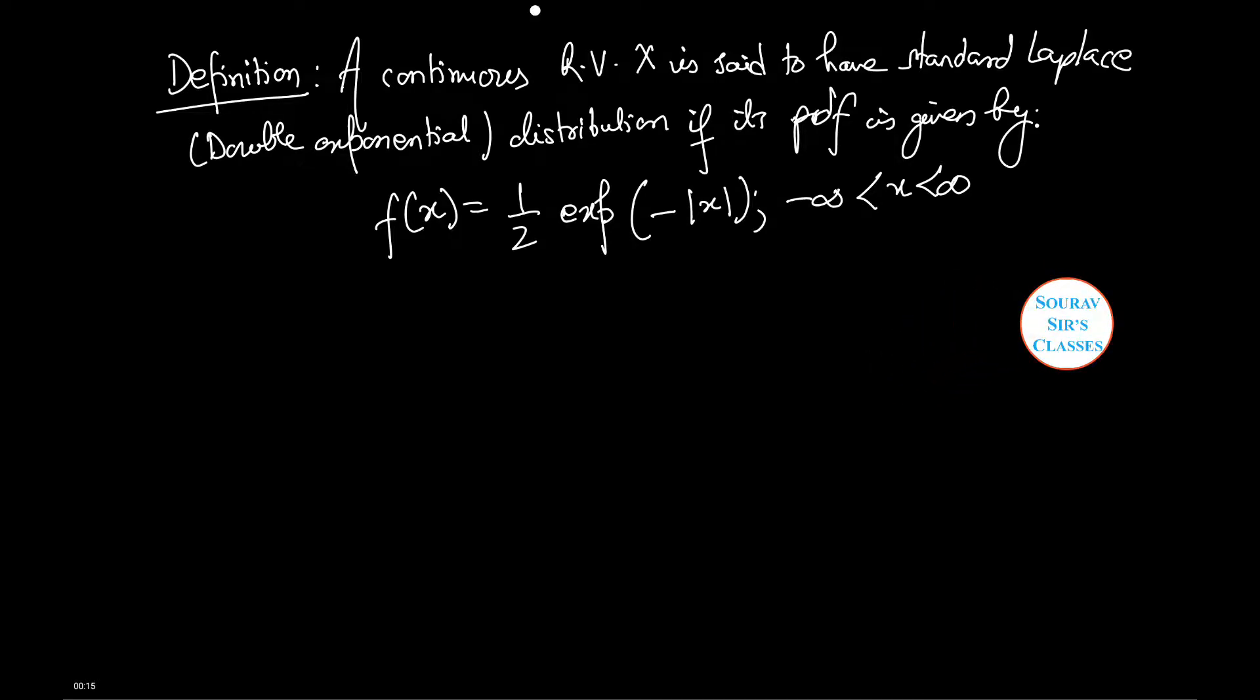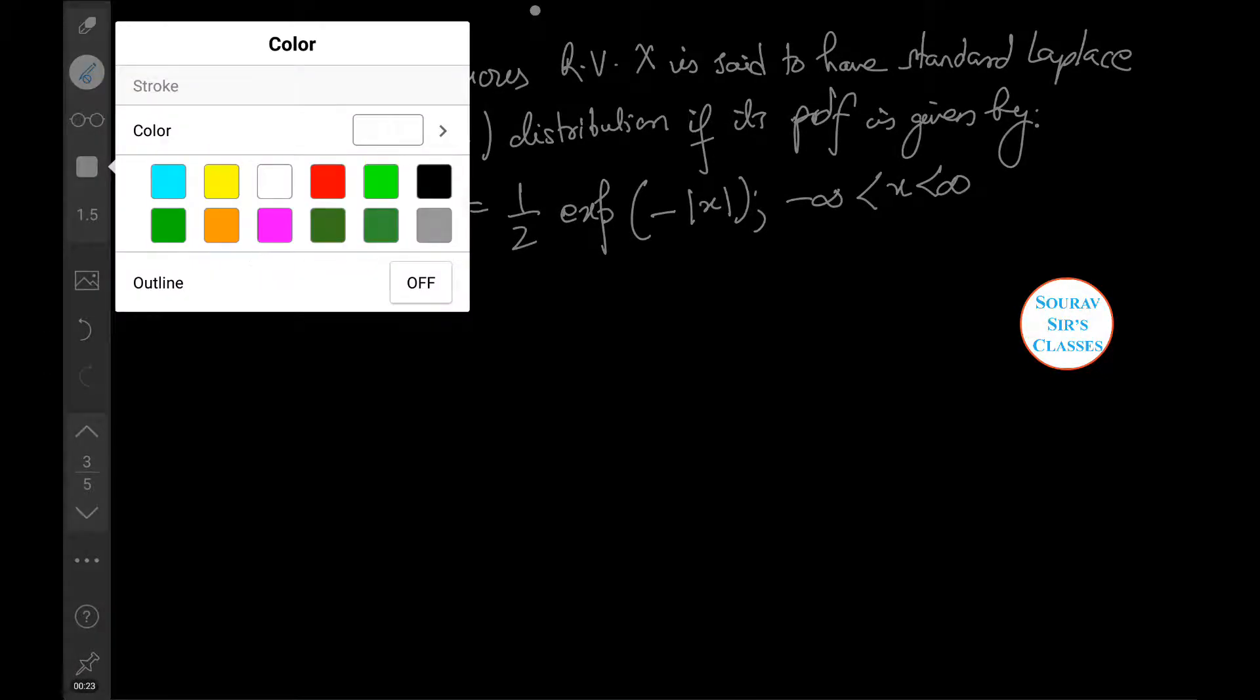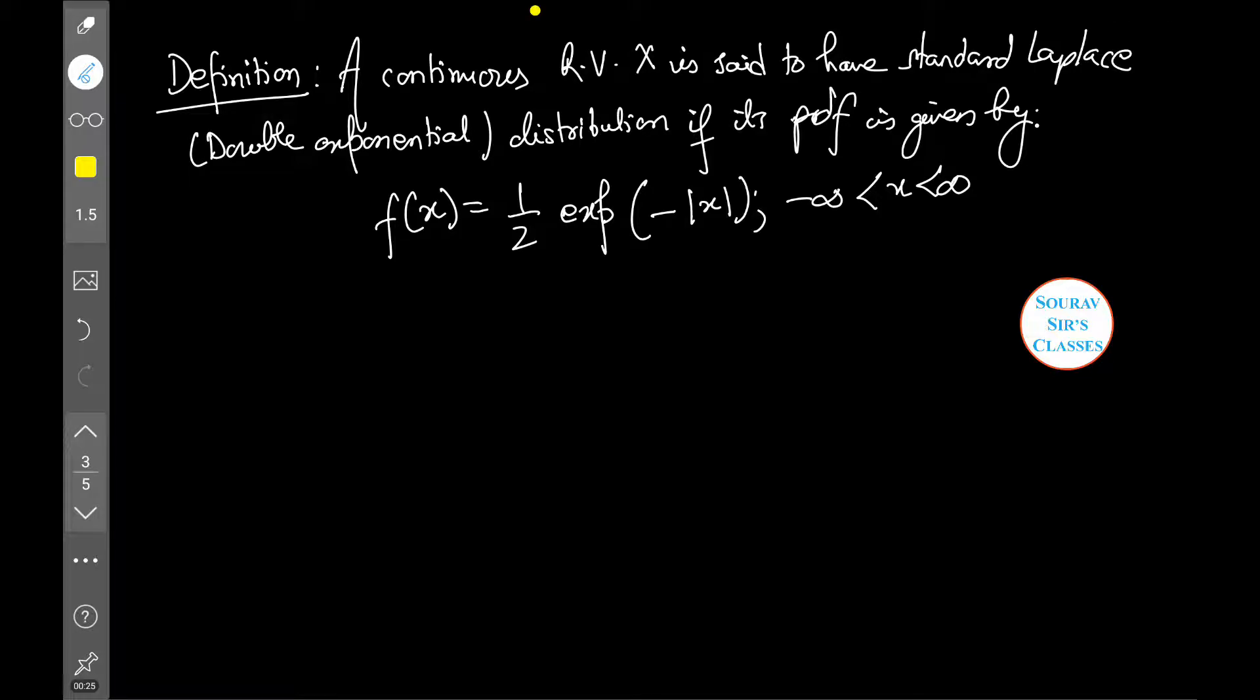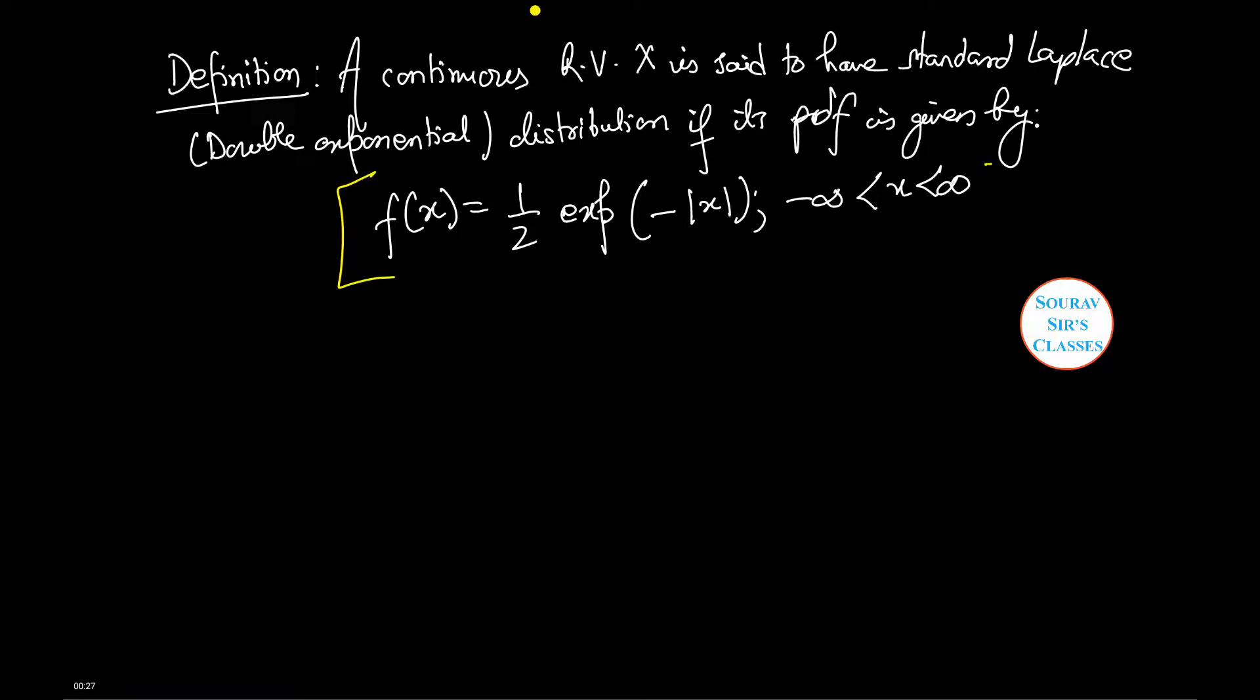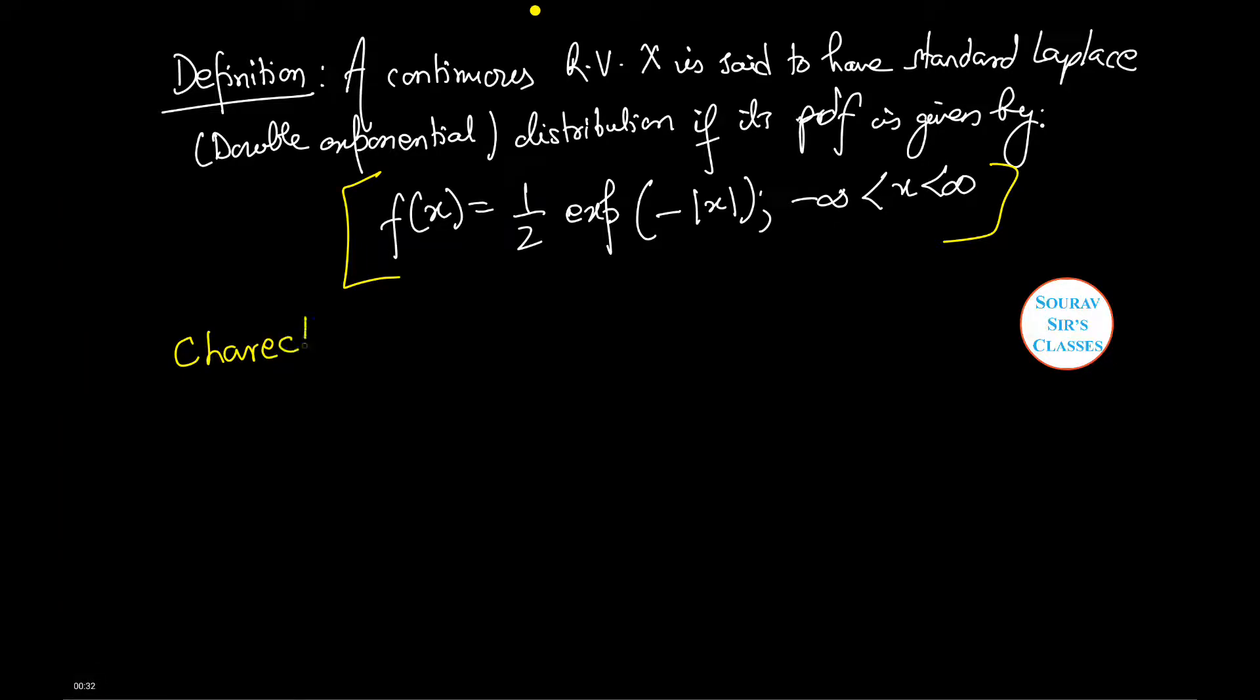Now the definition of a standard Laplace distribution: a continuous random variable X is said to have a standard Laplace distribution if its PDF is given as follows. Now let us see the characteristic function psi_X(t).